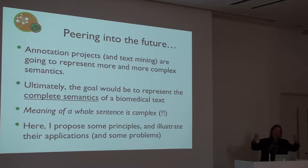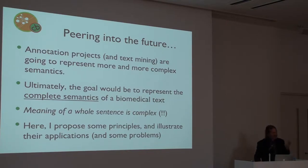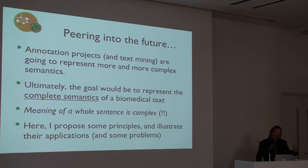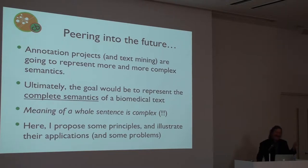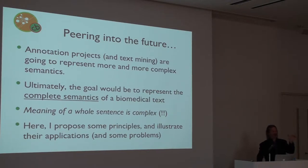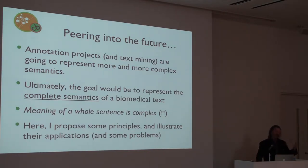I want to look down the line a little bit to what I think is going to happen in the relatively near future. I can be somewhat sure of this because my own lab is going to try and do this in annotating CRAFT, an existing corpus. We're going to try to get to the point where we can add more and more complex semantic representations so that we ultimately get to the point of representing the complete meaning of those texts. Getting the complete meaning of even a single sentence is really a pretty advanced and difficult task. I'm going to walk you through some principles about how we might do that successfully, and then show some application of those principles and some of the problems that arise.